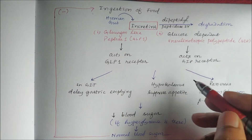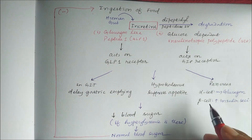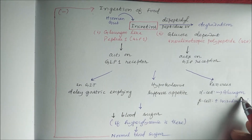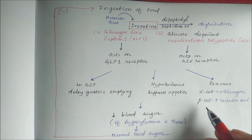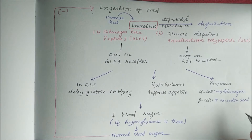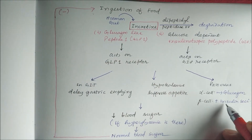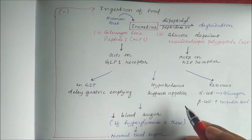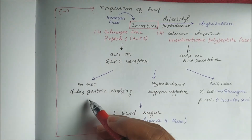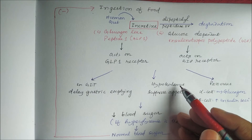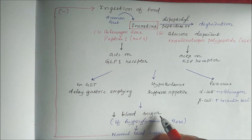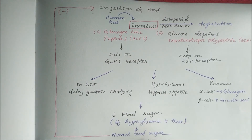Those receptors are present in the pancreas — in the islet of Langerhans. In the alpha cells they inhibit glucagon secretion, thereby decreasing glucose levels. In the beta cells they stimulate insulin secretion. They are also present in the GI tract where they delay gastric emptying, and in the hypothalamus they suppress appetite. All these effects ultimately reduce blood sugar levels when hyperglycemia is present.